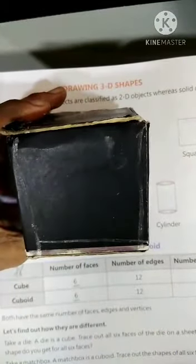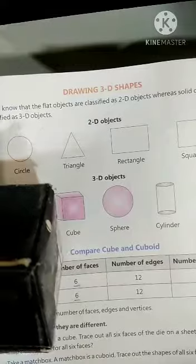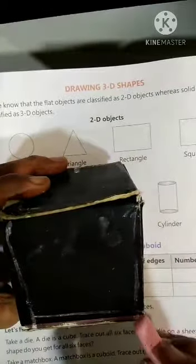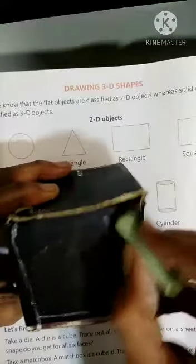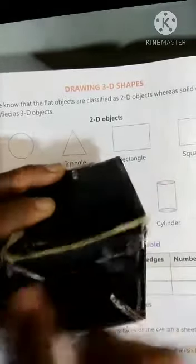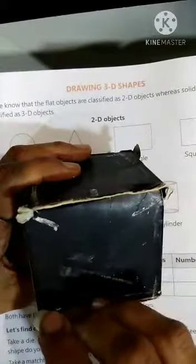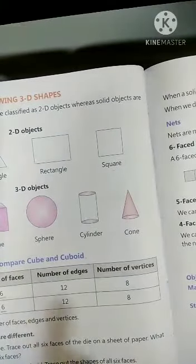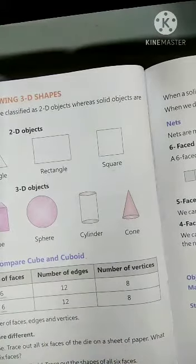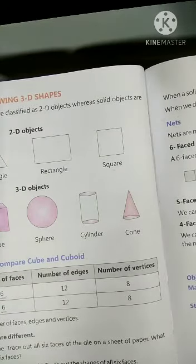Now, we will talk about the vertices. Vertices means corners. 1, 2, see... It is not visible now. 1, 2, 3, 4 - these are 4 corners, right? Now, up. Now, 5, 6, 7, and 8. So 8 vertices. Clear everyone? Cube and cuboid, they have same faces, same edges, same vertices. Only in cuboid, opposite sides are equal, and square, all the sides are same. Clear?